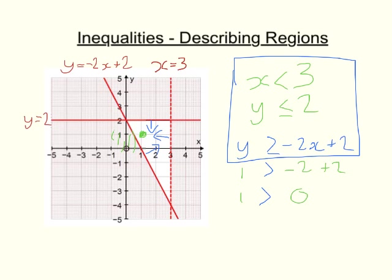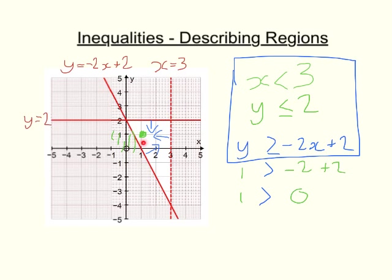To describe regions using inequalities, we find the equations of the lines that bound the regions and then decide whether we need the values to be bigger than or less than in each case. For vertical and horizontal lines, we can just decide whether it's to the left, right, up or down. For diagonal or sloped lines, we pick a point, substitute the coordinates into the inequality, and then choose the sign that works for that point.